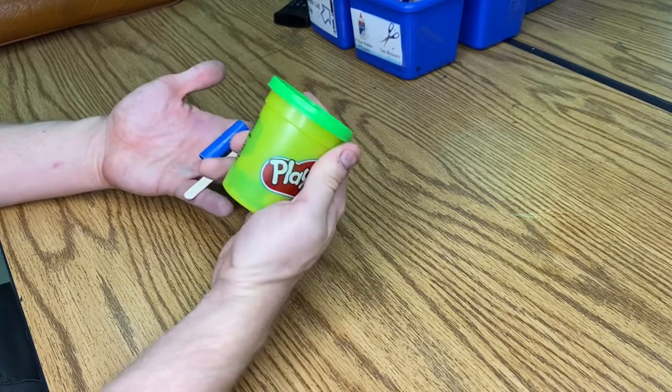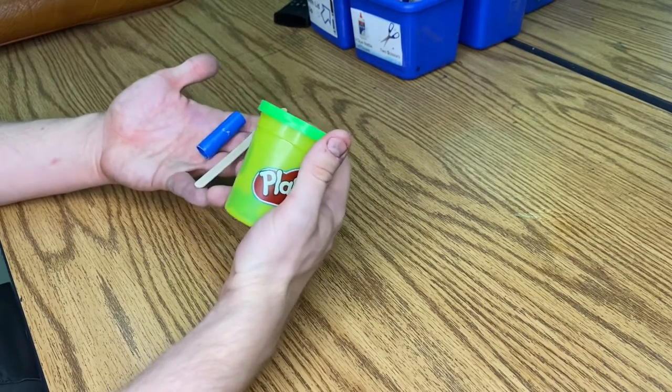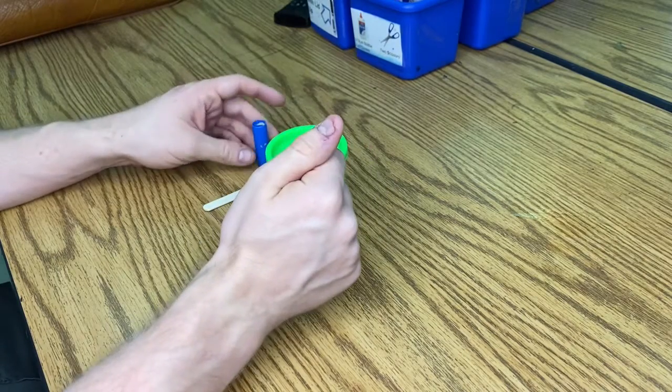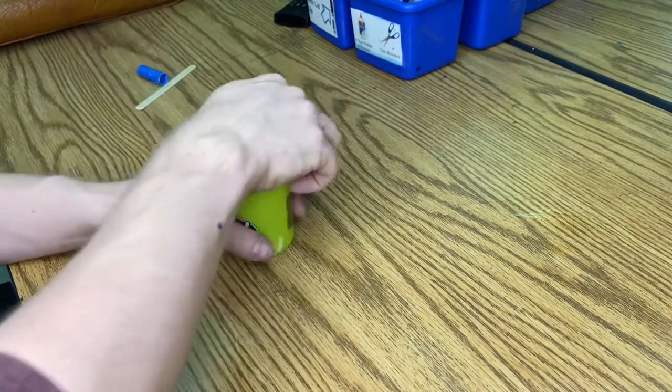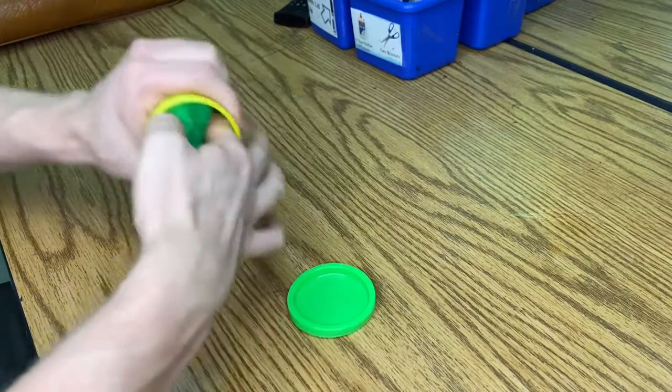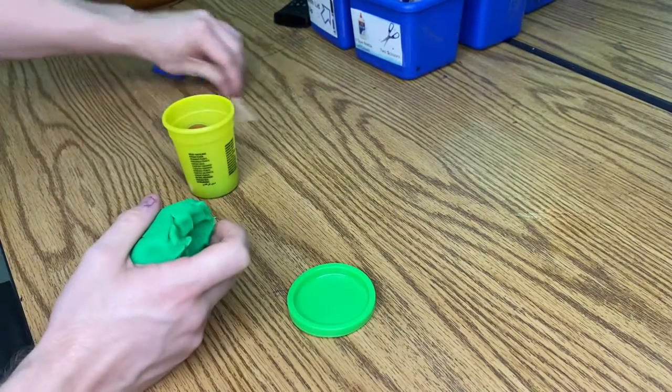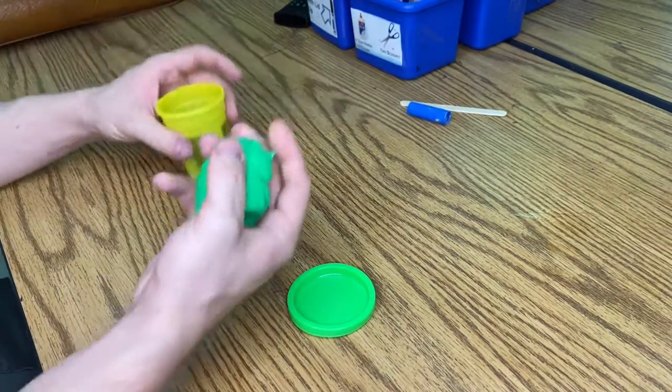You should have Play-Doh, a popsicle stick, and a marker cap. Give me a thumbs up if you have all those items. You can go ahead and take your Play-Doh out of the cup. You can push your marker cap and popsicle stick away from you. You don't need it right now.